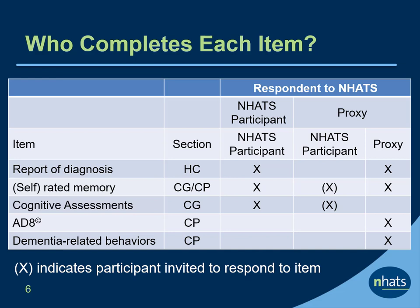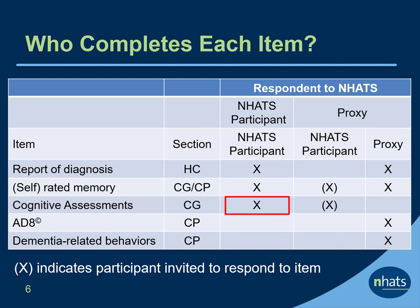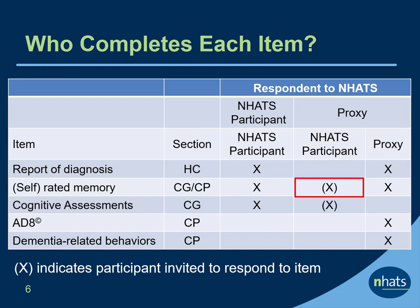If the NHATS participant is the respondent to the interview, the participant reports if they have ever been diagnosed with Alzheimer's disease or dementia, several items on self-rated memory, and a series of cognitive assessments. If there is a proxy respondent, the proxy is asked about the older adult's reported diagnosis. The NHATS participant is invited to complete the CG section including self-rated memory items and cognitive assessments. When a proxy is the respondent, proxy-rated memory, a dementia screen called the AD-8, and a set of items on dementia-related behaviors are completed by the proxy in the CP section.